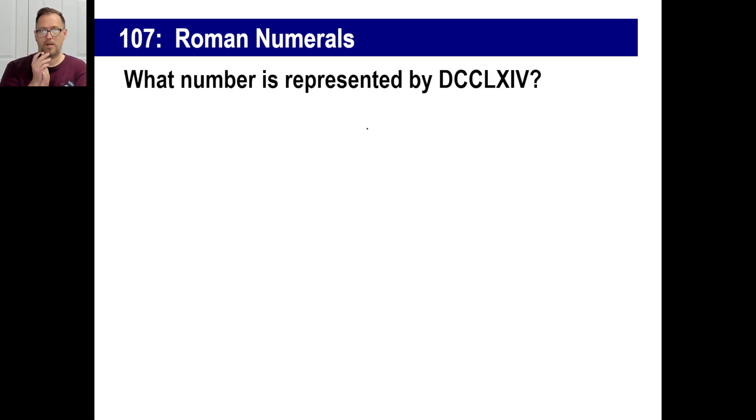You tell me what number is represented by D C C L X I V. Well, we know D is five hundred, right? So another two hundred would give us seven hundred. L is fifty, but L plus X is sixty, right? One taken away from five would be four. So the answer is seven hundred sixty-four.